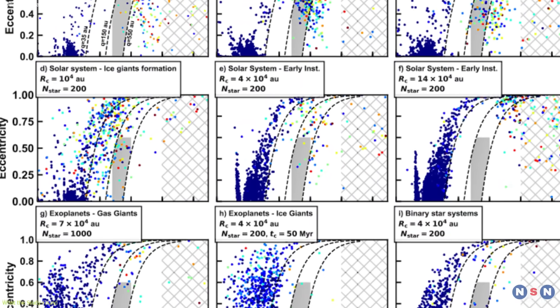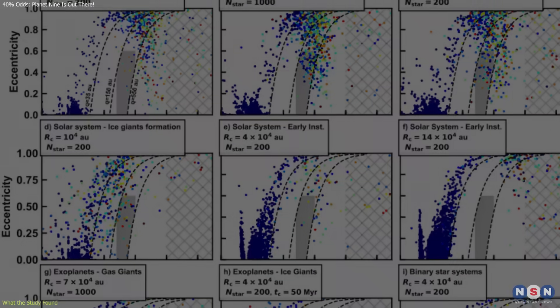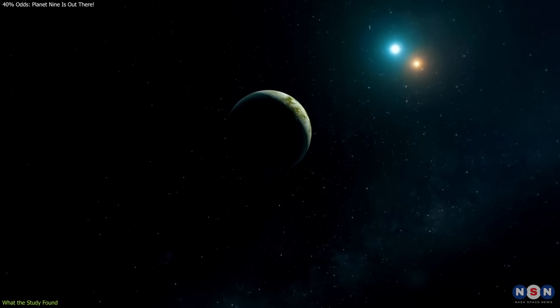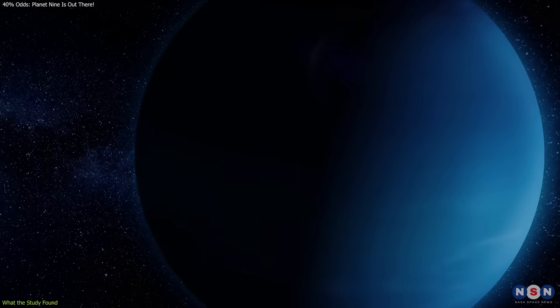To answer that, they ran detailed simulations of thousands of planetary systems, some resembling ours, others featuring different arrangements like binary stars or multiple ice giants.